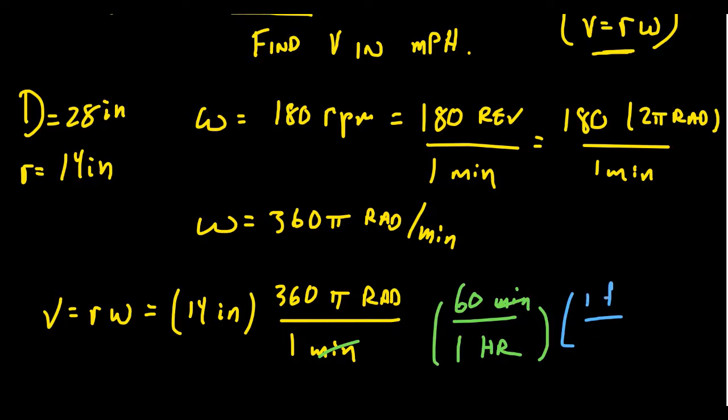You have one foot is equal to 12 inches so that these inches cancel out. Now we're measuring feet per hour, which isn't quite right yet. So we have to convert from feet to miles, for which one mile is equal to 5,280 feet, for which now the feet cancel out.